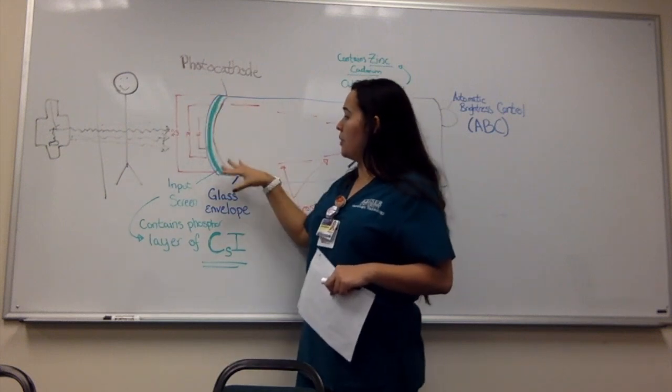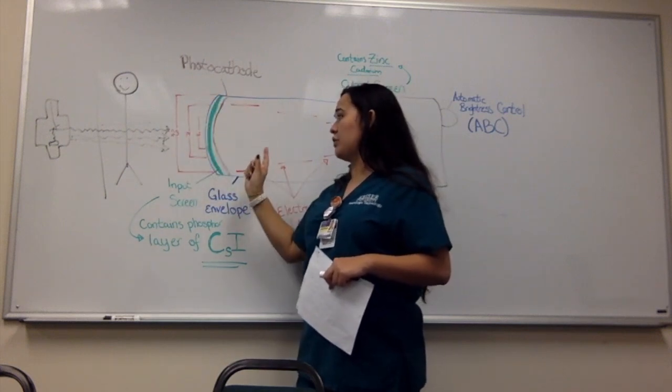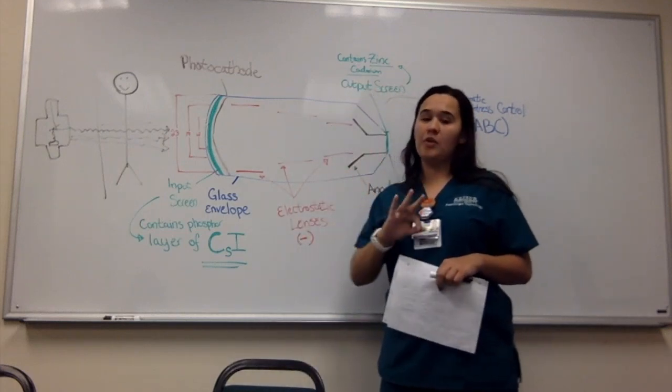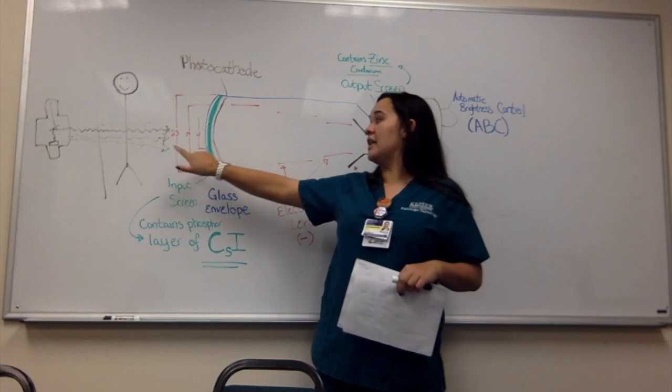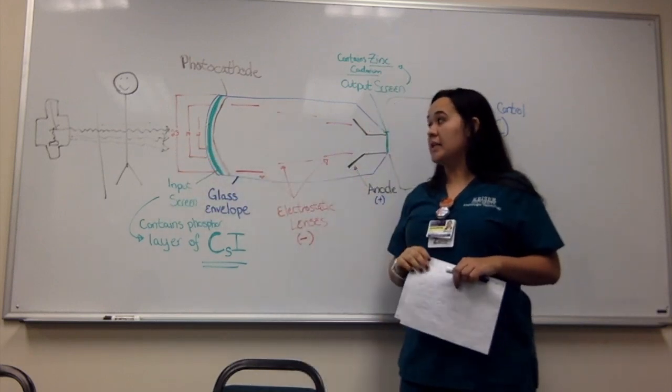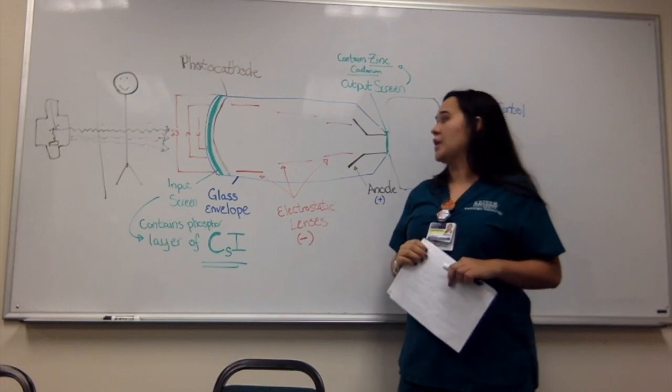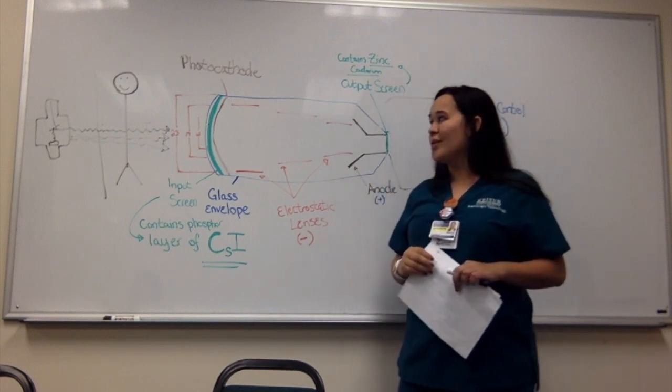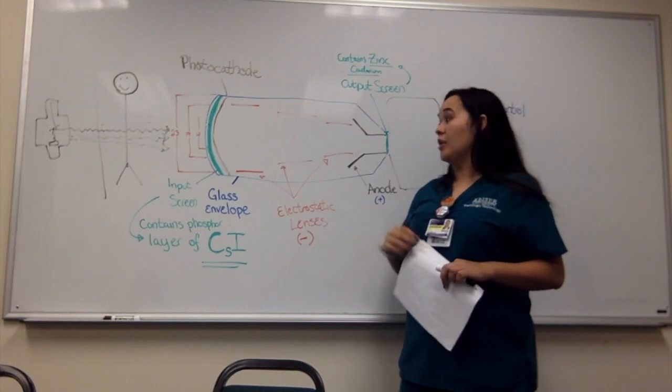Over here we have the input screen, which the photons have to pass through first. In the input screen, it's one screen and three different sizes. We have the 12, the 17, and the 23. The smaller the input screen size, the more magnification there is. This increases the resolution, but it also increases the patient's dose. It lowers the brightness.